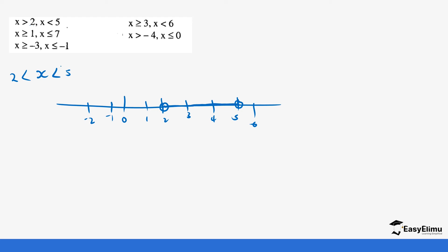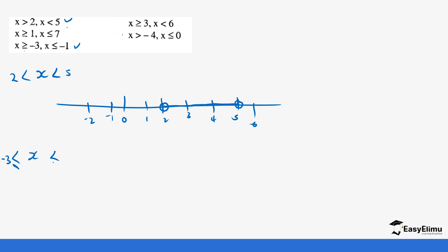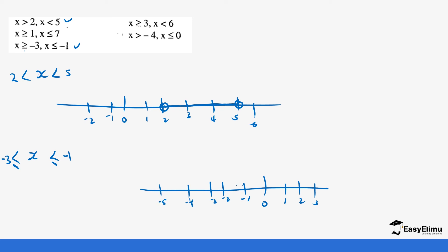Second question: x is greater than or equal to negative 3 and x is less than or equal to negative 1. We draw x with the two signs: x is greater than or equal to negative 3, and x is less than or equal to negative 1. On the number line: negative 1, negative 2, negative 3, negative 4, negative 5. x is greater than or equal to negative 3, so negative 3 is part of x, and x can also be negative 1 because of the equal sign. So x can be any value between negative 3 and negative 1, including both endpoints. You can do the remaining three questions and represent those compound statements on your number line.